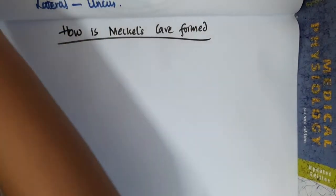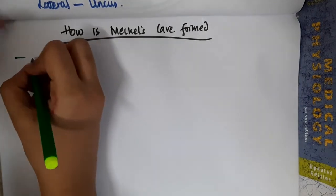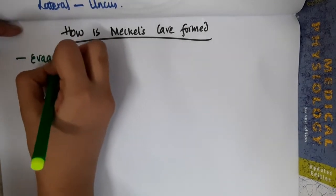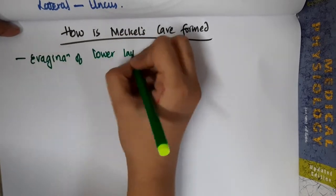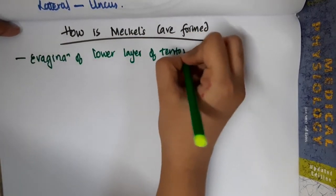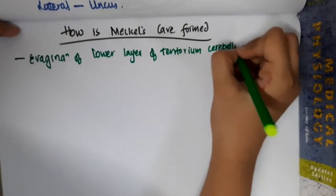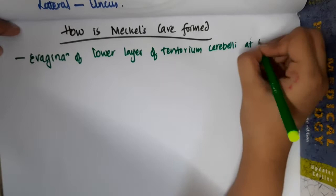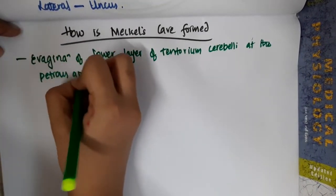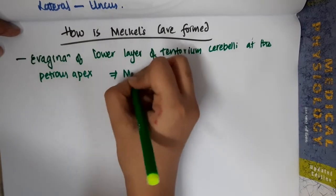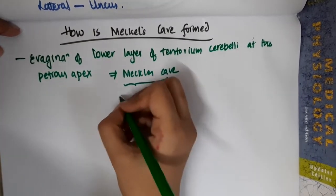Meckel's cave is formed by evagination of the lower layer of tentorium cerebelli. This evagination of the lower layer of tentorium cerebelli at the petrous apex is called Meckel's cave.